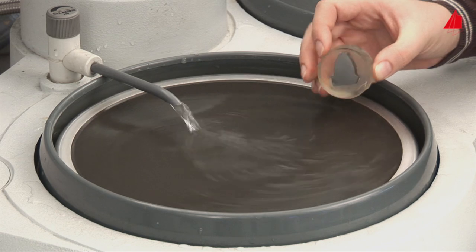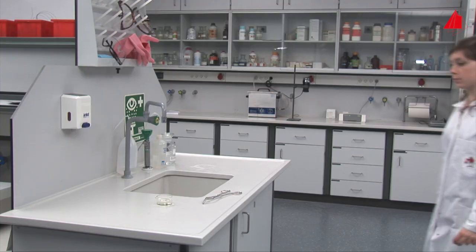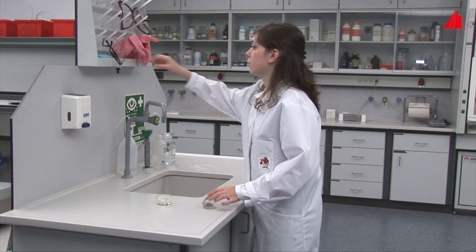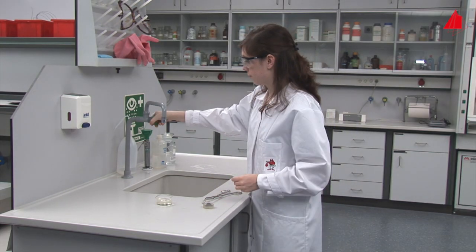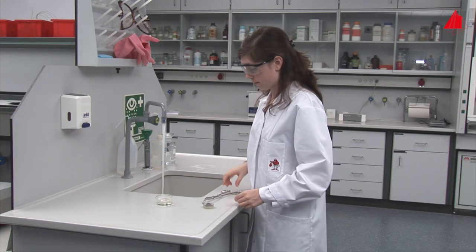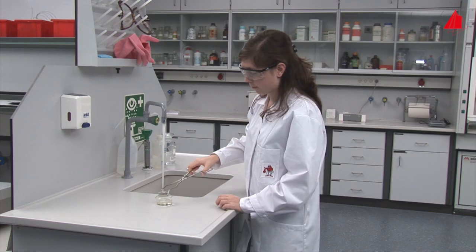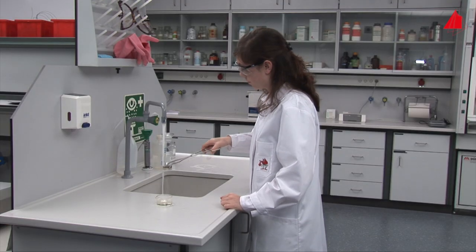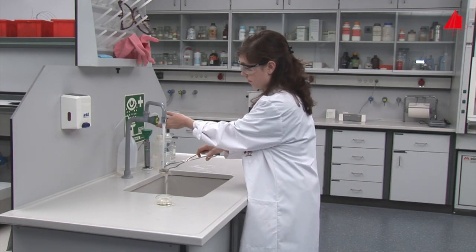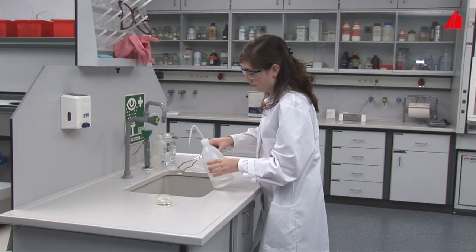As before, the internal structure will only be revealed by etching. But now the material tester uses a different etchant. This time it is nitric acid diluted in ethanol. She holds the mounted sample with pliers and immerses it into the etchant. After a few seconds, she takes the sample out again, washes it thoroughly with water, then with alcohol and finally dries it with a hairdryer.